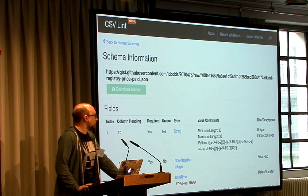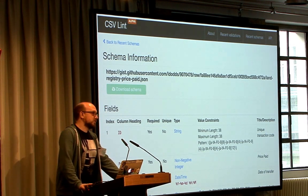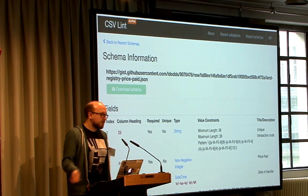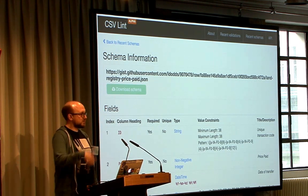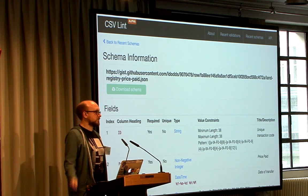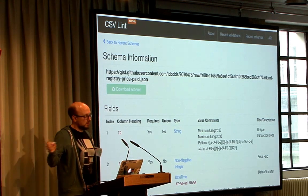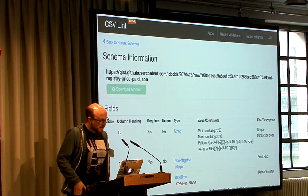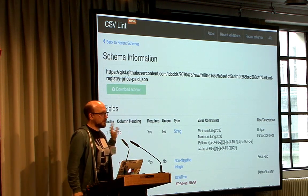You can also specify a schema. We've based the schema on the JSON table schema, and it includes things like whether the column's required, the data type, column title, and value constraints, which is generally via a regular expression. If any of you saw Jenny talk about CSV on the web, we're just starting to support CSV on the web as well — currently supported in the Ruby gem that sits underneath the CSV Lint website, though we haven't yet got full CSV on the web support on the website, but that's coming.